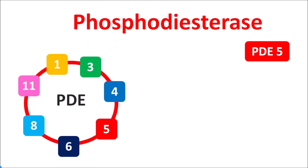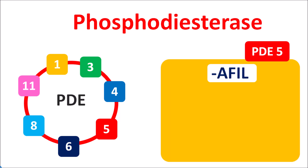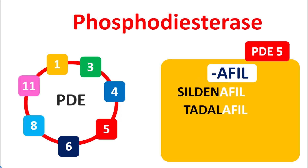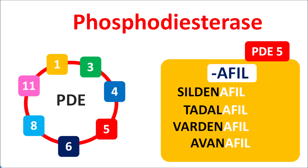Among these, PDE5 is one of the important enzymes on which a few drugs act. Drugs blocking PDE5 enzyme activity are recognized by the simple suffix '-afil'. So we have drugs like sildenafil, tadalafil, vardenafil, and avanafil — these four drugs are classified as PDE5 inhibitors, all sharing the same suffix '-afil'.